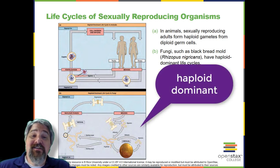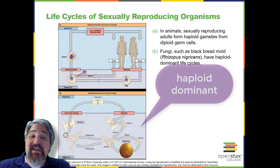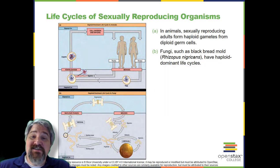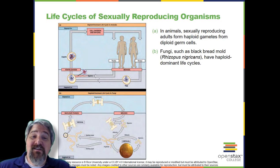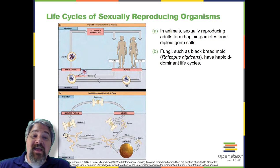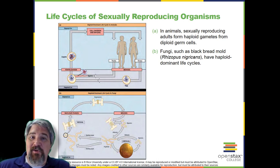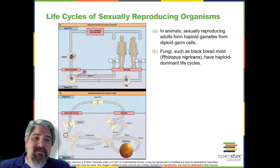Haploid dominant, in which the multicellular haploid stage is the most obvious life stage and there is no multicellular diploid stage, as with all fungi and some algae. And alternation of generations, in which the two stages — haploid and diploid — are apparent to one degree or another depending on the group, as with plants and some algae.